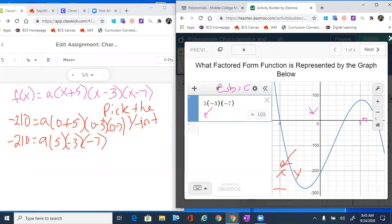And we get an answer of 105. So let's come back here. I'm gonna write negative 210 equals to a times 105.